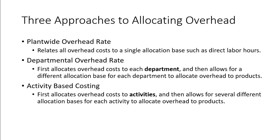Each method will result in a different factory overhead cost applied to each product. In theory, activity-based costing should be the most accurate, as it uses the most information in determining the cost per unit. For the rest of this video, we're going to look at an example applying a plant-wide overhead rate, where we will calculate the total cost and profit for two products. In the next video, we will look at the same example and see how the costs and profit change when an activity-based approach is applied.